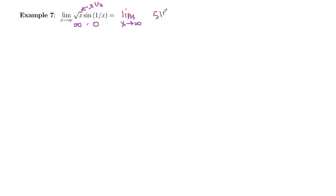So we have sine 1 over x in the numerator, and I'm going to write that as sine of x to the negative 1 power. And then in the denominator, I've got x to the negative 1 half power. And so this is 1 over root x. As x goes to infinity, bottom goes to 0.